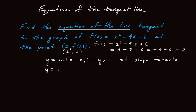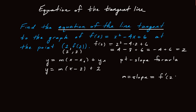We can go ahead and write that down. We have m times the quantity x minus 2, plus 2, since y1 is also 2. What's left is to find m. The m is the slope, and it's the slope of the tangent line, so that must be the derivative of our function at x equals 2, because the x value we're looking at is 2.